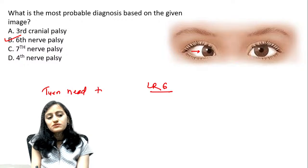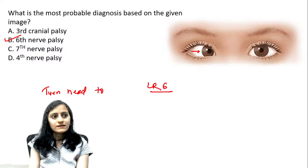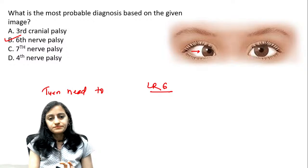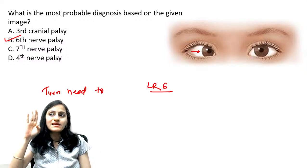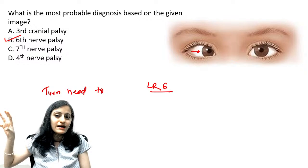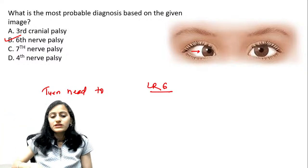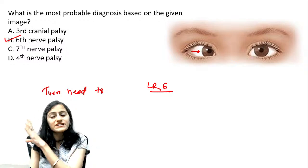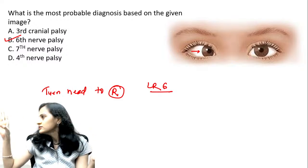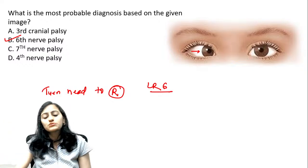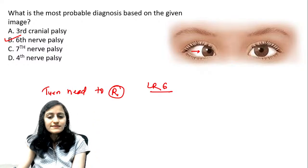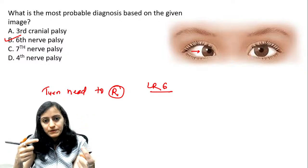In sixth nerve palsy causing right esotropia, which way does the patient turn the head? Because the right lateral rectus is paralyzed, the patient cannot see the right field with that eye. So the patient turns the head to the right side — toward the same side as the action of the paralyzed muscle — to compensate and see that field.